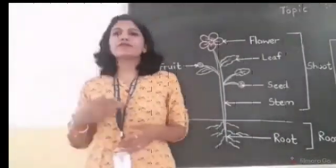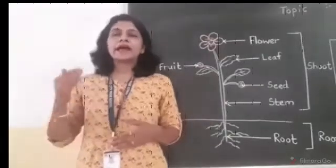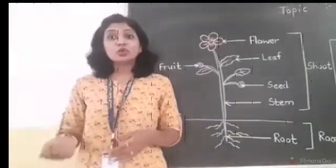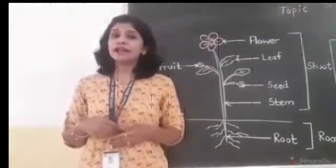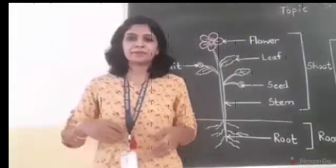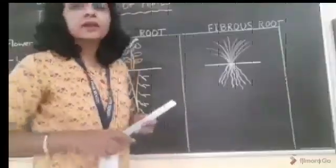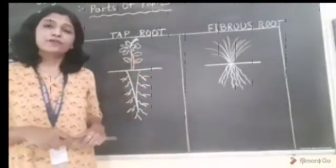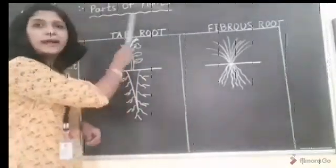And some of roots like carrot, radish, store food in them so that we can eat it. There are two types of roots. Taproot and fibrous root. Let's see about taproot first.